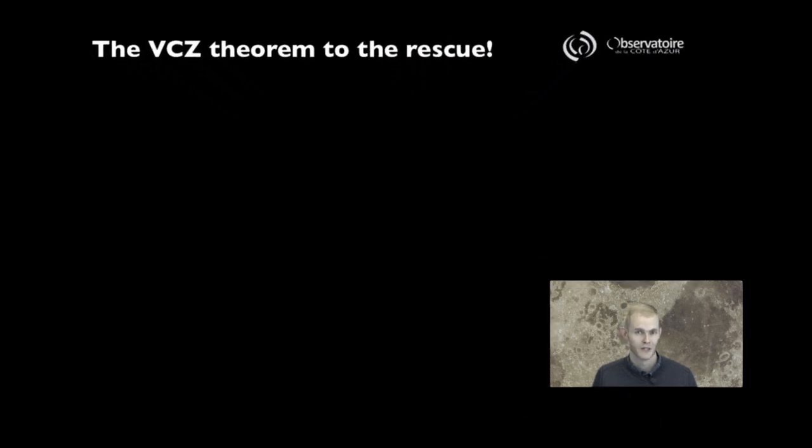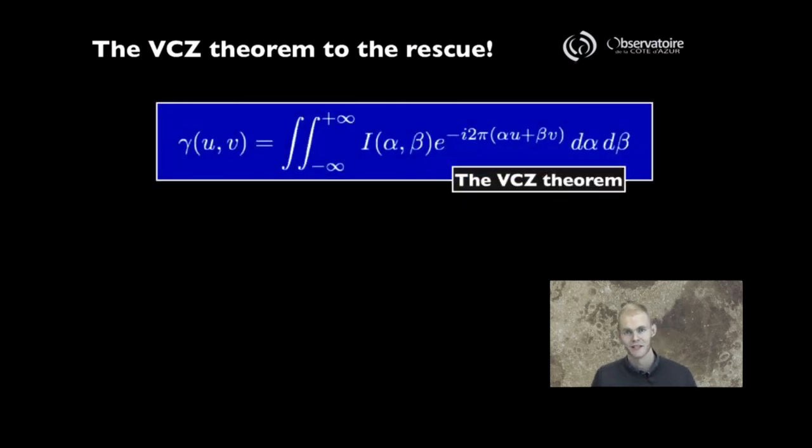To do so, we're going to rely on our good friend, the Van Cittert-Zernike theorem again. You remember, the Van Cittert-Zernike was this very nice Fourier transform relationship that relates our visibility measurements in UV coordinate space to the intensity distribution of our object.